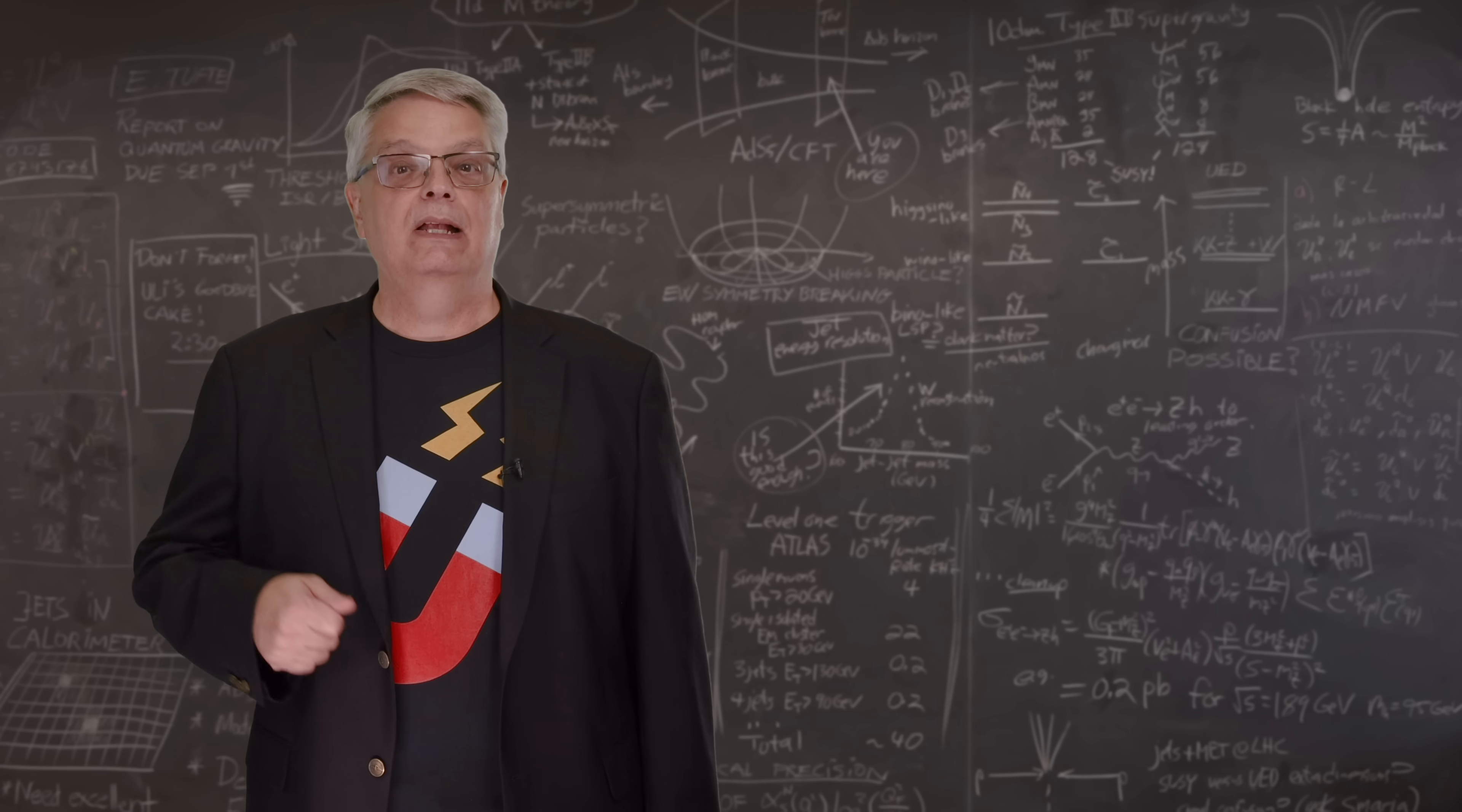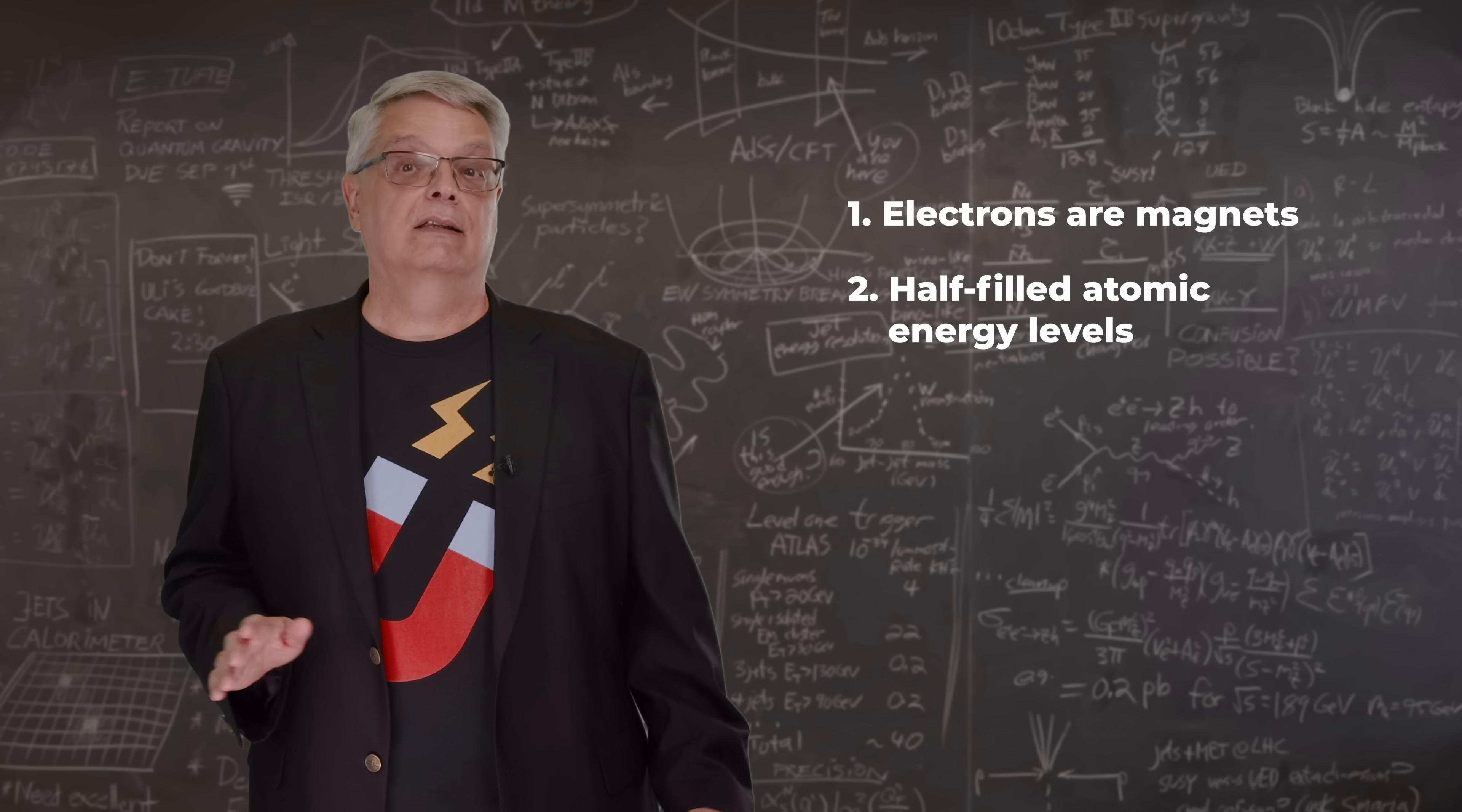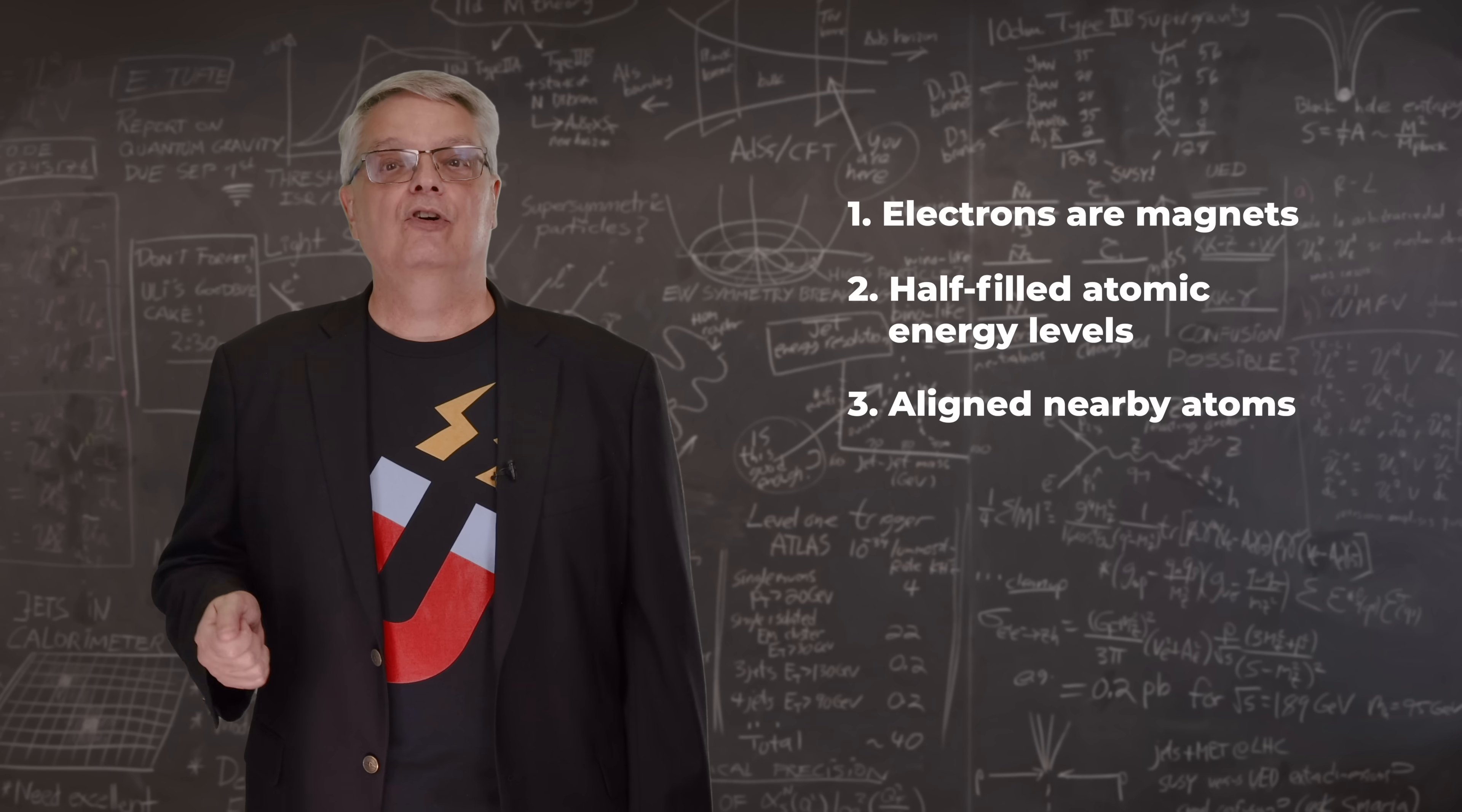In order for a piece of metal to be a magnet, it needs four distinct things to happen. The first is that electrons have to be magnets all by themselves. The second is that the electrons need to be in atoms who have about half of their energy level filled up. That gives you magnetic atoms. The third is that the crystal structure has to be such that the atoms prefer to have little atomic magnets all aligned. That gives you small magnetic domains.